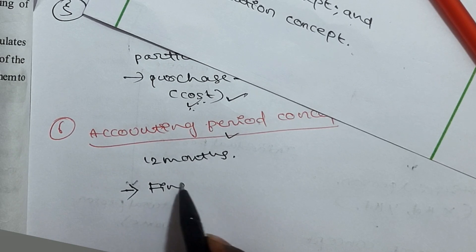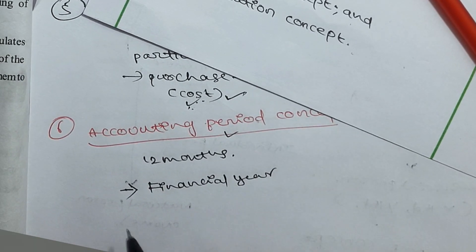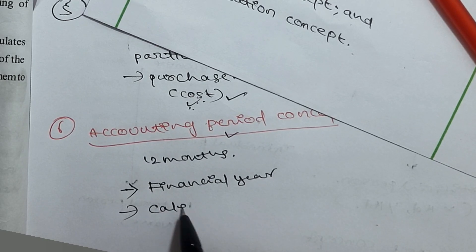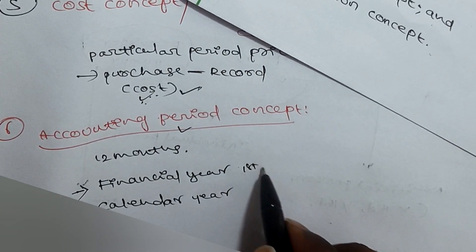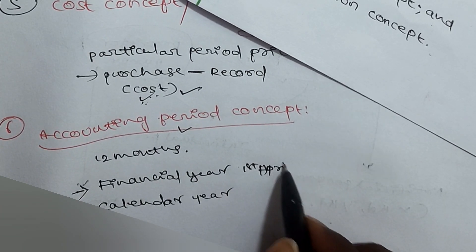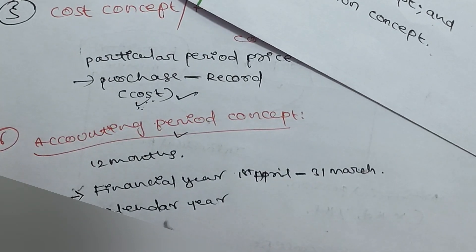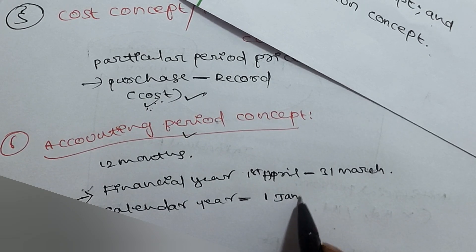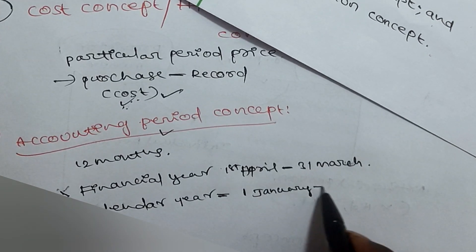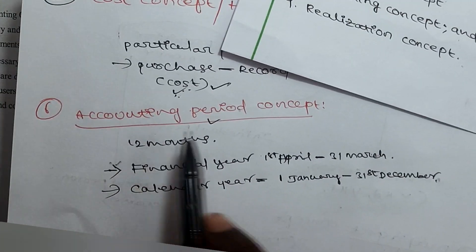There are two types of accounting periods: first, the financial year — 1st April to 31st March; and second, the calendar year — 1st January to 31st December.